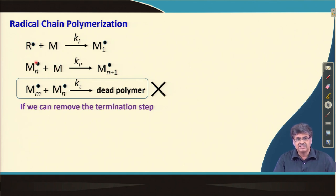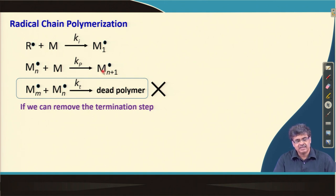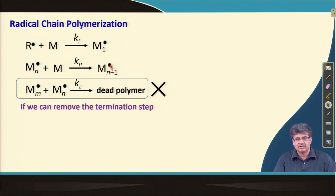The lifetime of propagating radicals in conventional radical polymerization is about 0.1 seconds to 10 seconds. In this case, we can actually prolong the lifetime of this radical to hours or even longer, as long as there is no termination reaction.